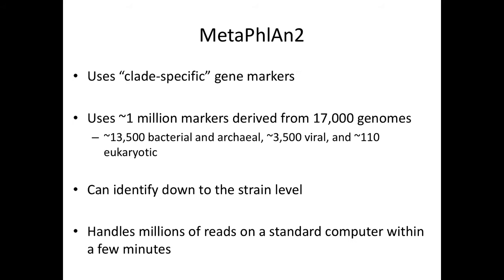The real advantage of MetaPhlAn2 is that because you're mapping to a relatively small database of clade-specific marker genes, the similarity search is pretty fast. You know that most reads won't align, so it runs very quickly. The downside is you might only be using about 2% of your reads — so if you're just getting taxonomic profiling from your metagenomics data, you're throwing out a large portion of data. You get probably very good estimates of what taxa are there based on what's in the database, but you could be missing a lot.